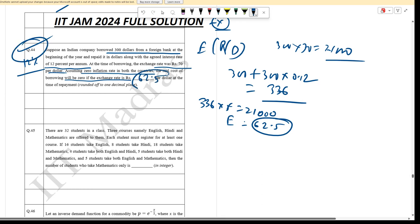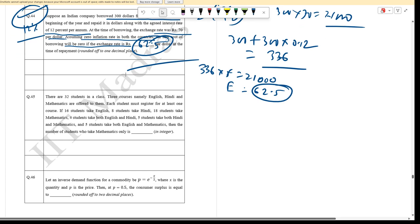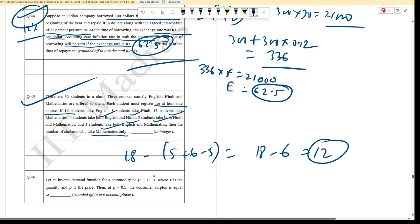Question 45: 32 students in a class, three courses namely English, Hindi, and Mathematics are offered. Each student takes at least one course. 16 students took English, 8 took Hindi, 18 took Mathematics. 4 students took two courses each, 5 took all three. Find the number of students who have taken Maths only. The answer is 12 students.